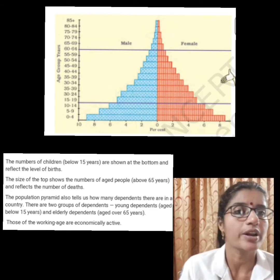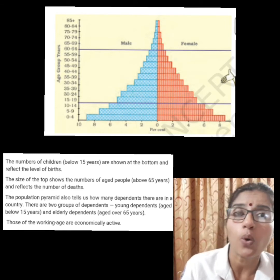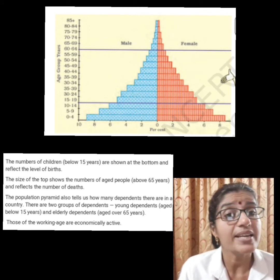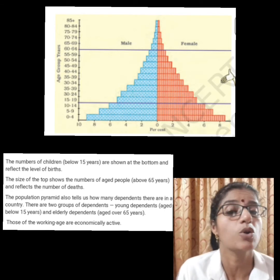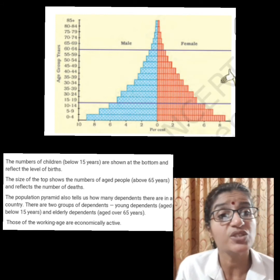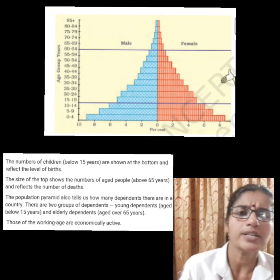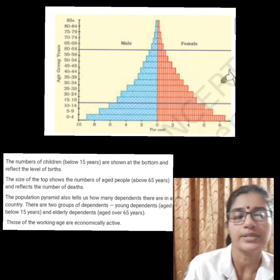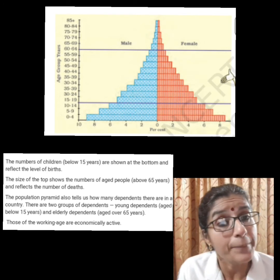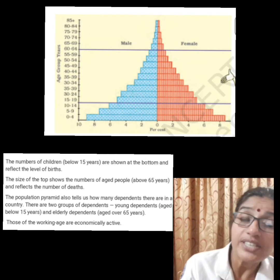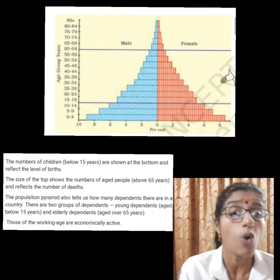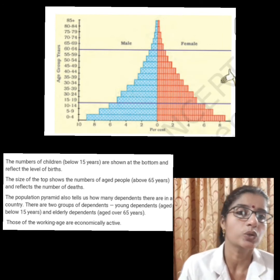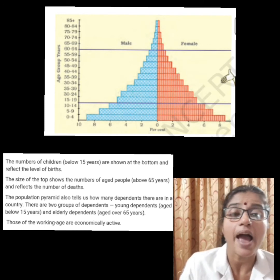The number of children below 15 years are shown at the bottom and reflect the level of births. The size at the top shows the number of aged people above 65 years, and it also tells us how many dependents there are in a country. There are two groups of dependents: young dependents aged below 15 years, and elderly dependents aged over 65 years. In between there is the working age group — the economically active people.